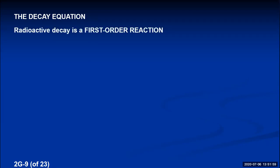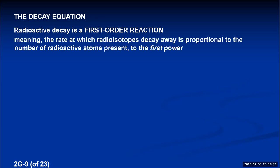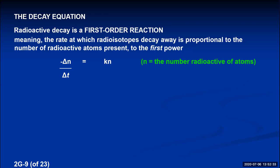Mathematically, radioactive decay follows a first-order reaction — the rate at which radioisotopes decay is proportional to the number of radioactive atoms present to the first power. Written mathematically: the rate of decay (−ΔN/Δt) equals k multiplied by N. This is called first-order kinetics. Using calculus notation, −dN/dt = kN, where the d's indicate infinitesimally small intervals of change.